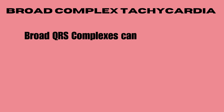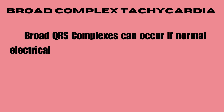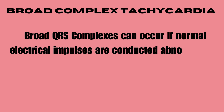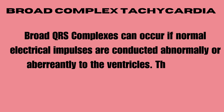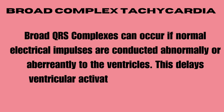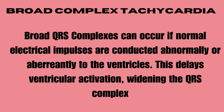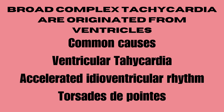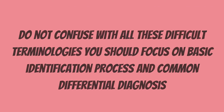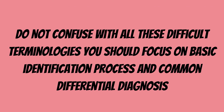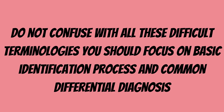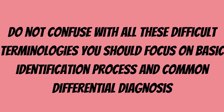Broad complex tachycardia: broad QRS complexes can occur if normal electrical impulses are conducted abnormally or aberrantly to the ventricles, delaying ventricular activation and widening the QRS complexes. Broad complex tachycardias originate from the ventricles. Common causes include ventricular tachycardia, accelerated idioventricular rhythm, and Torsades de Pointes. Do not be confused by these difficult terminologies — you should focus on the basic identification process and common differential diagnosis.